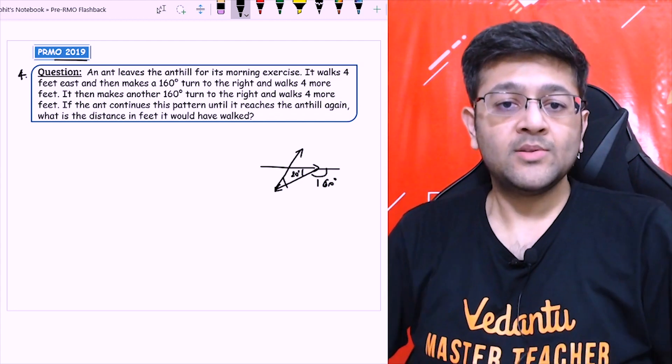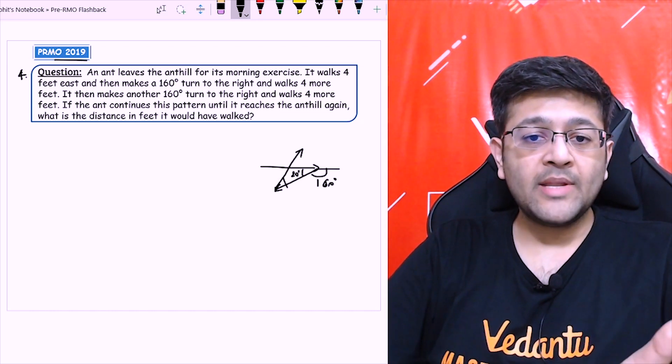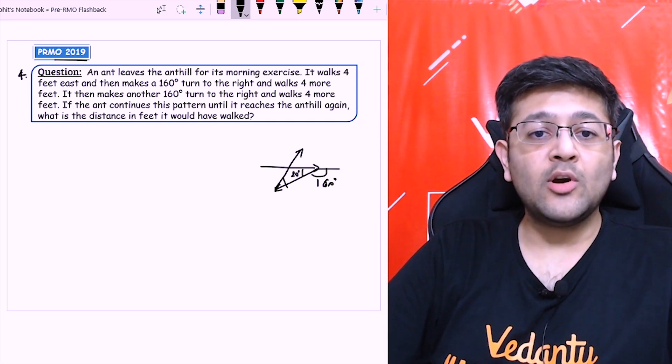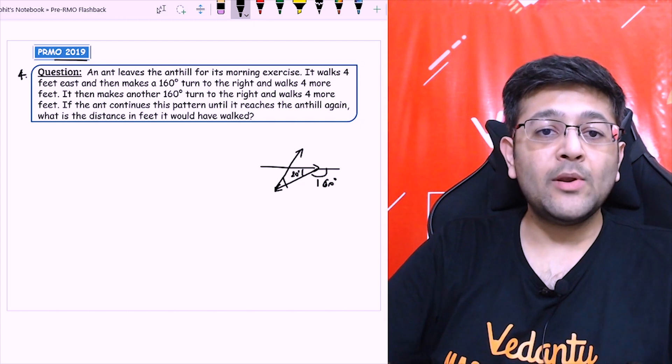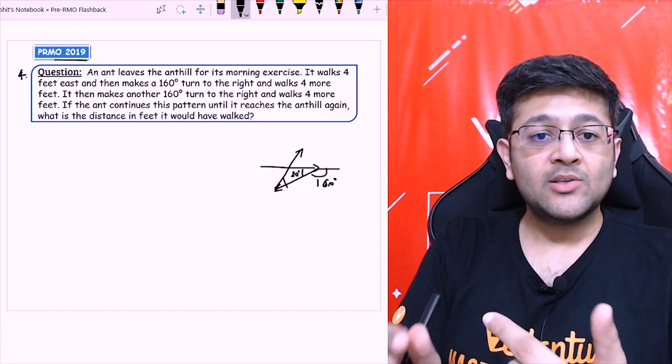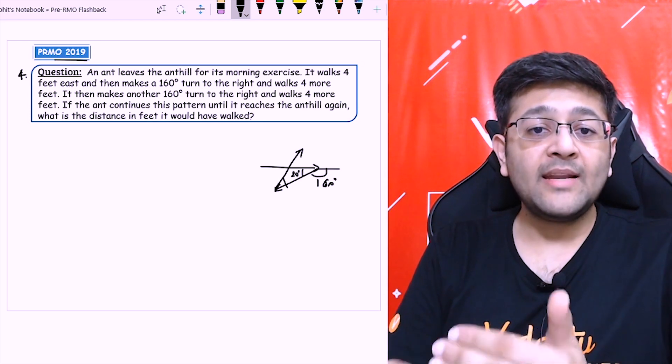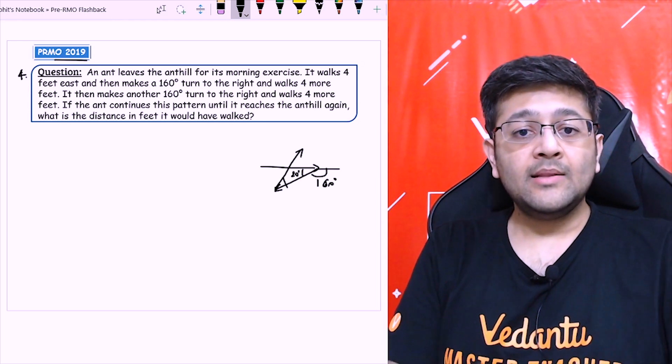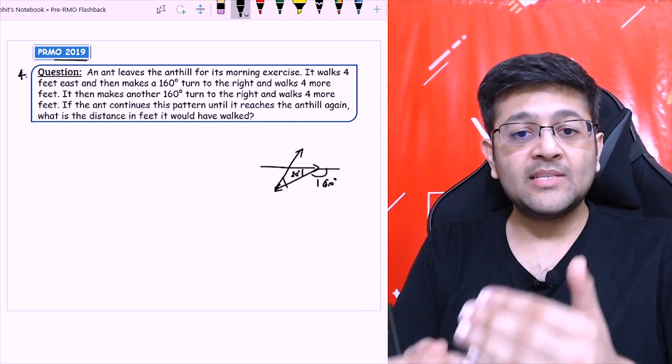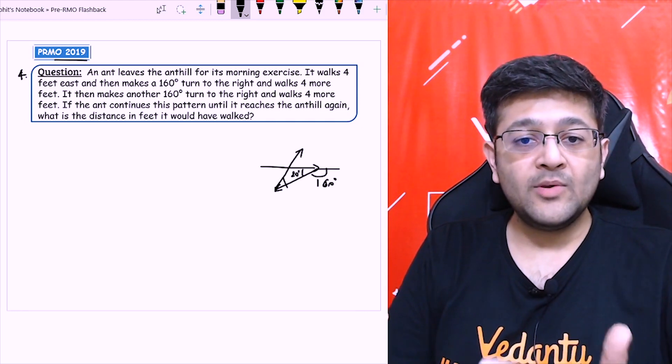There are many methods of doing this. One of the methods that I will tell you is that each time it rotates by 160 degrees. If it has to reach again to the original location, it has to be a multiple of 360 degree, because in one rotation, the total angle covered is 360. So because each time it is rotating by 160, finally, if it has to reach the anthill again, the multiples of 160 should be a multiple of 360.